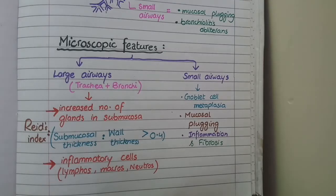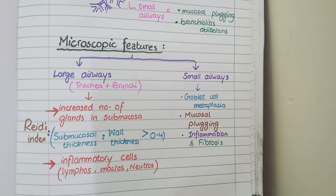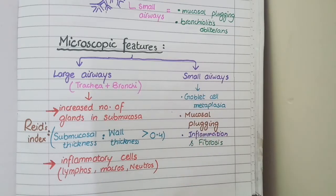Now let's come to the microscopic features of chronic bronchitis. A key principle to remember is that chronic bronchitis occurs in smokers. In response to smoke particles, the walls of both large and small airways start producing excessive mucous secretion. The purpose of producing high amounts of mucus is to trap smoke particles at the level of airways so they do not enter the lungs and cause damage at the level of alveoli. All morphological features reflect this excessive mucous secretion response.